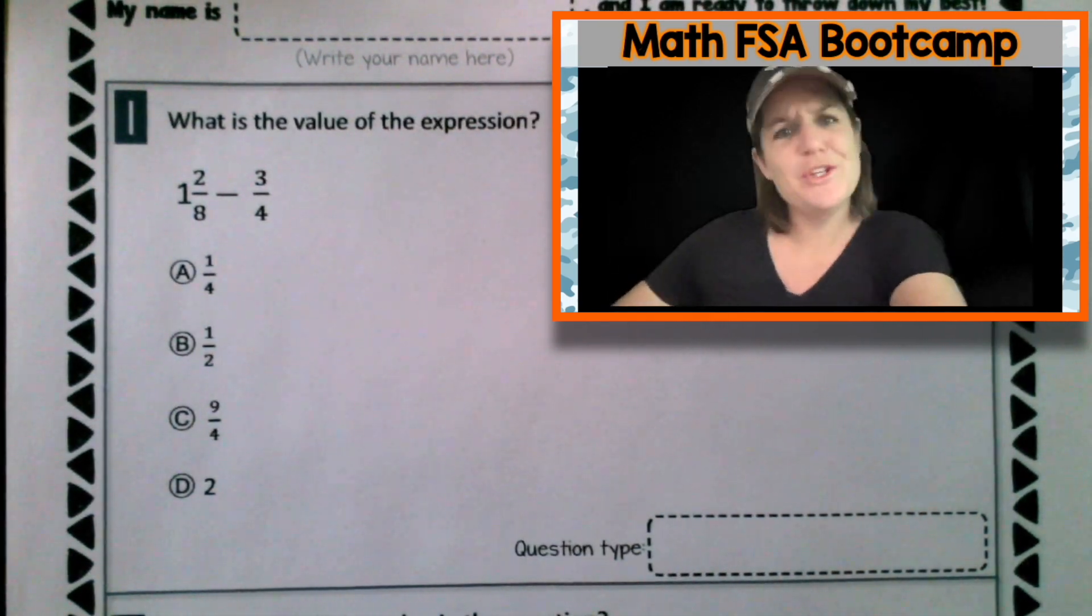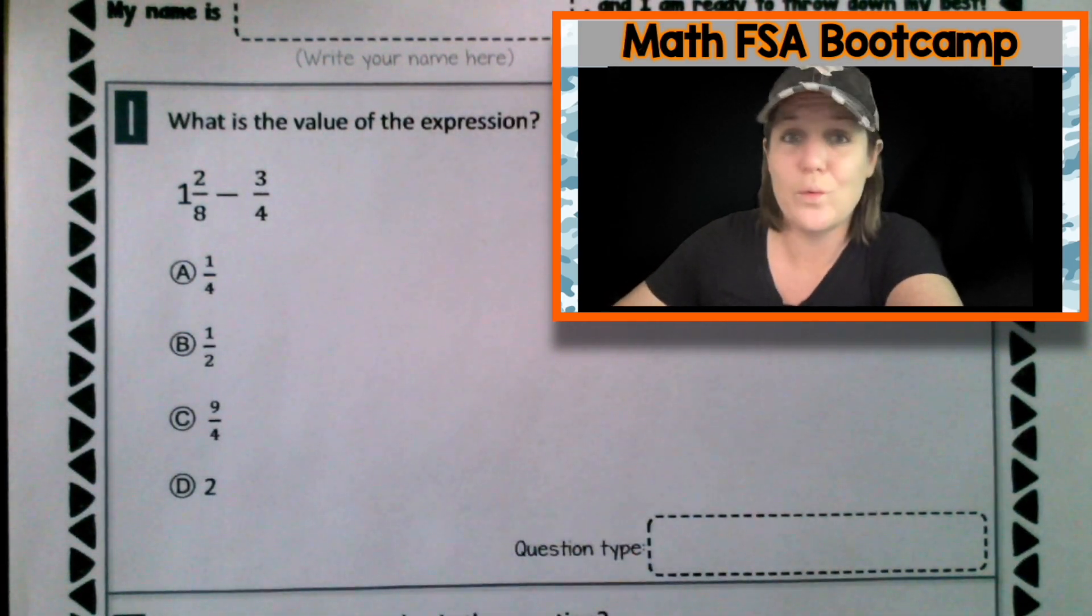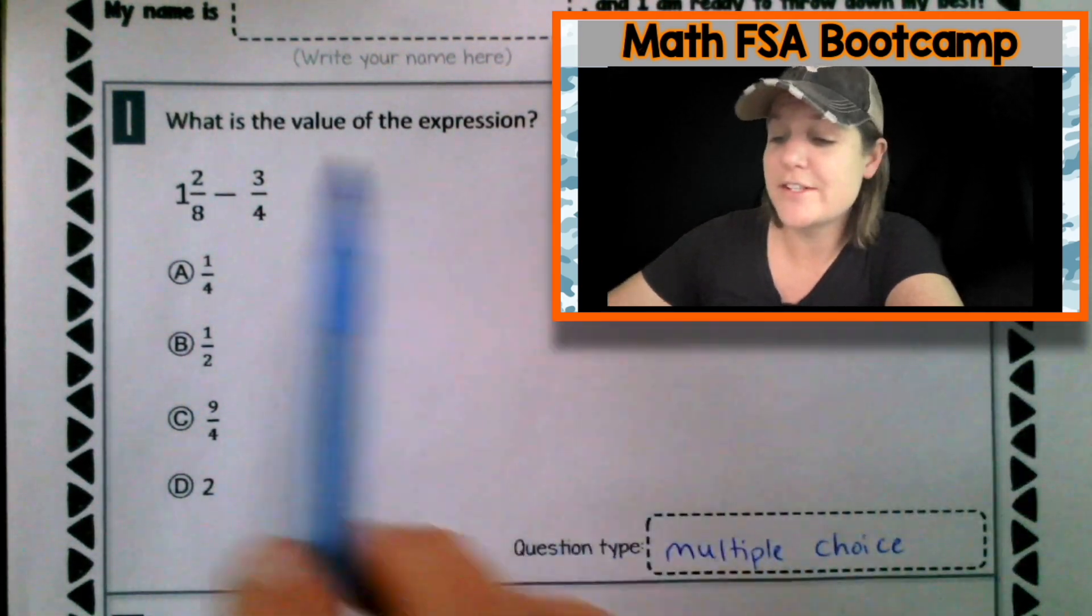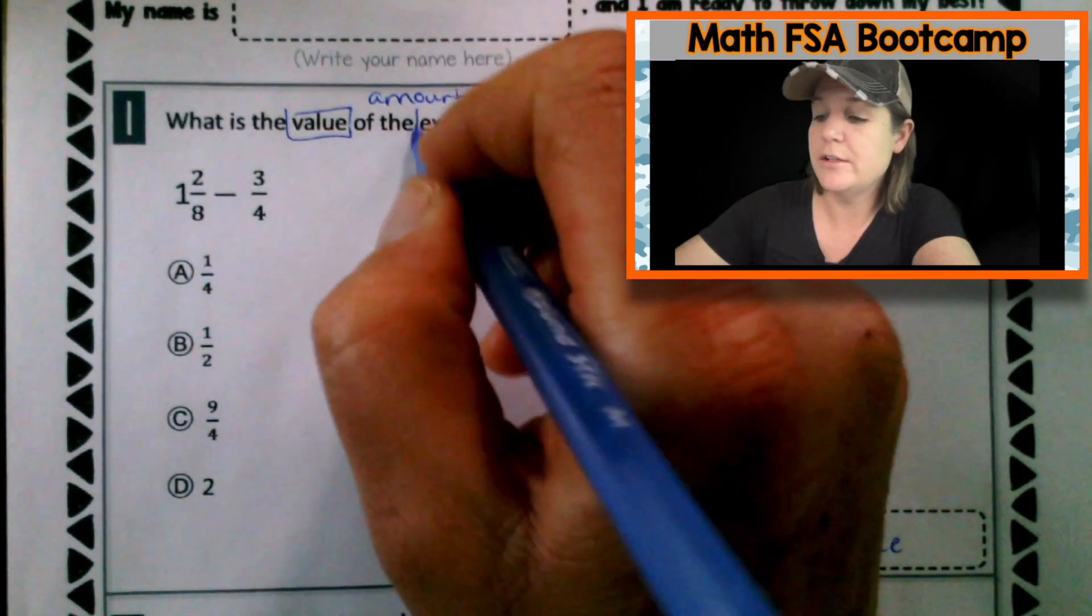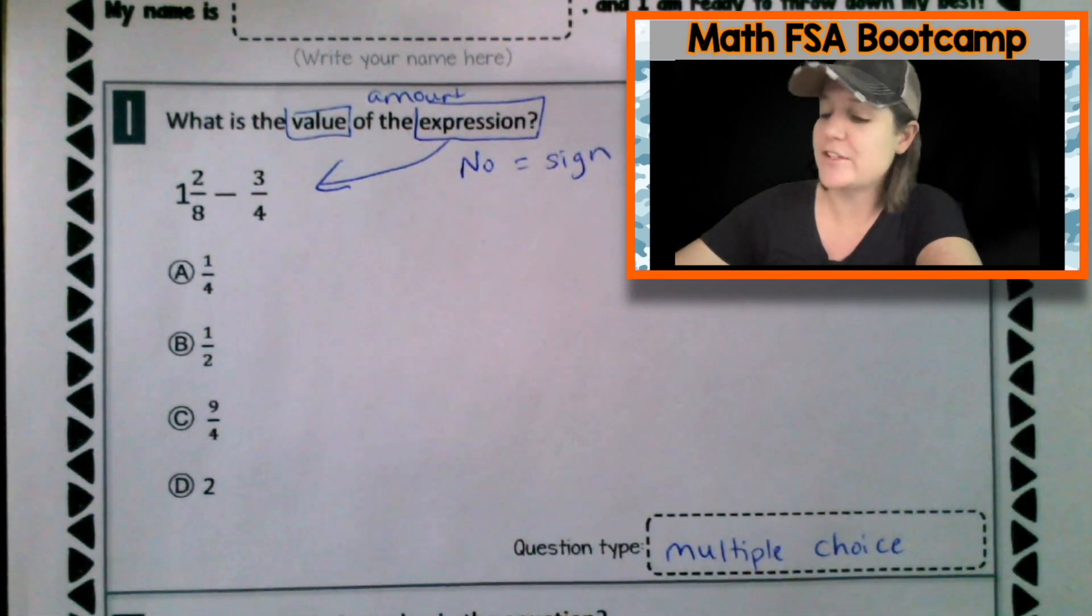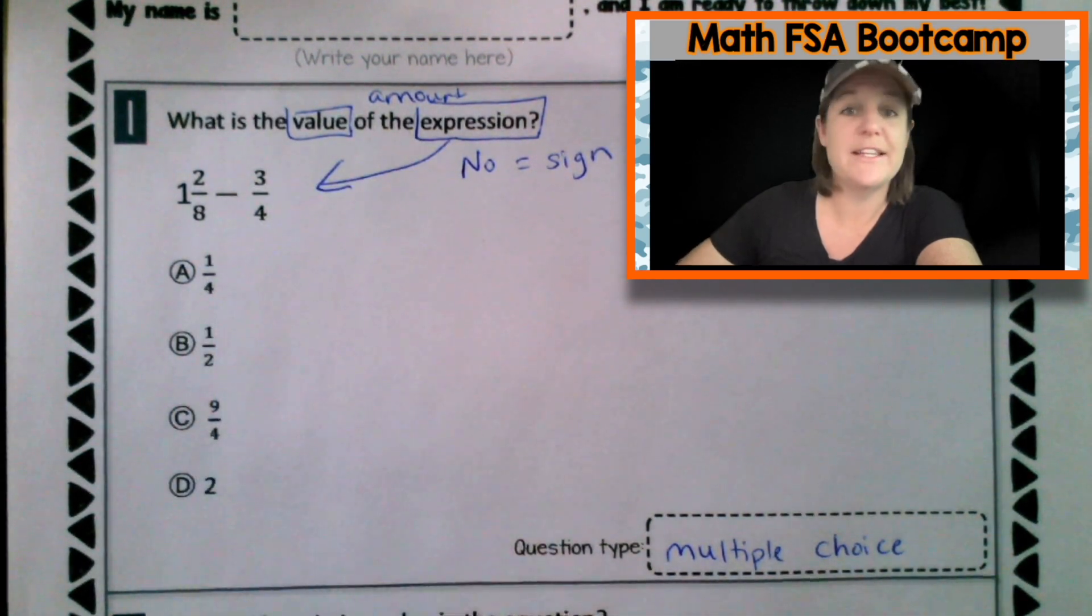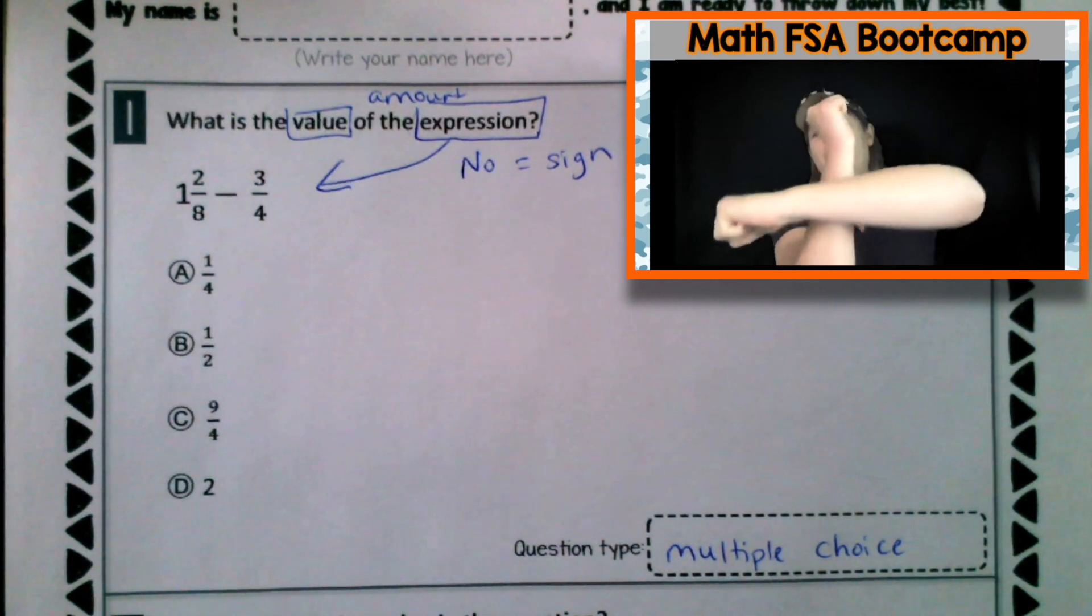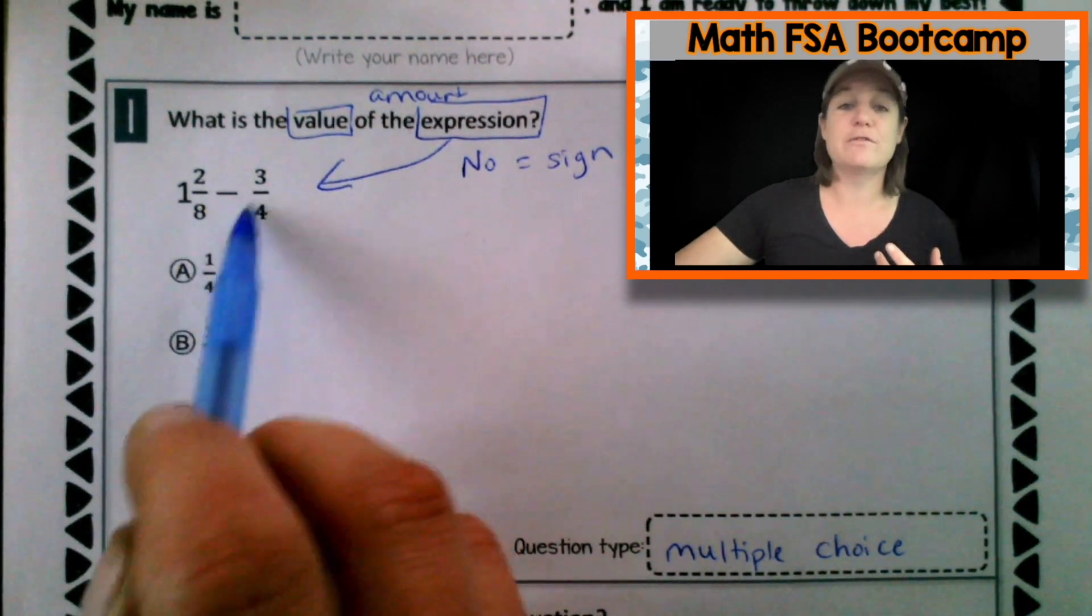All right, everybody, welcome back. So you know how we do it. First, we're going to look at the question and identify the question type. I see four answer choices, so this is multiple choice. Now let's mark up our text. This says, what is the value of the expression. The expression is right there. And remember that expressions do not have equal signs. Equations do, expressions do not. So we are subtracting here. We've got 1 and 2/8 minus 3/4. And I know when I add or subtract fractions, my denominators must match. When you add or subtract, your denoms must match. And right now they are not matching. We have 8 as our denominator and 4, we need to make them match.